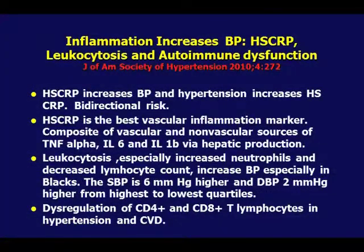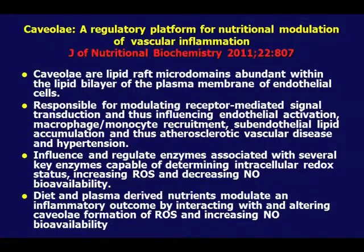CRP is the best inflammation marker because it's a composite of all other inflammatory mediators from every site throughout the body. Interleukin-6, interleukin-1b, and TNF-alpha are the three precursors that go to the liver, and the liver cranks out C-reactive protein. So when you measure CRP, you're getting a composite of total body inflammation. In every membrane in your body, you have what are called caveolae — lipid raft micro domains — present in every cell.